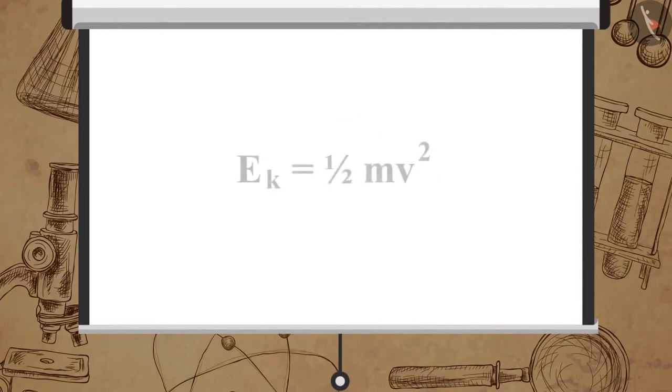Therefore, kinetic energy possessed by an object of mass m and moving with uniform velocity v is given by Ek equals 1/2 m v squared.